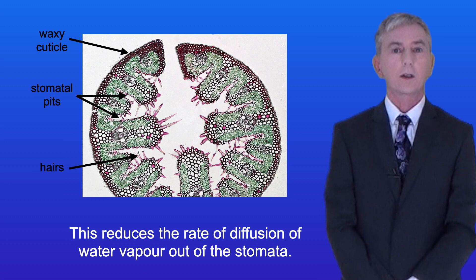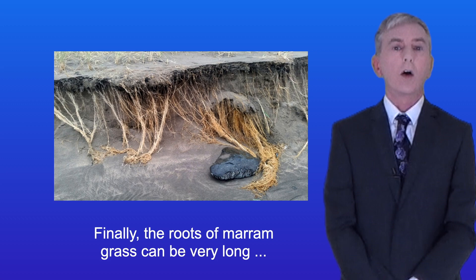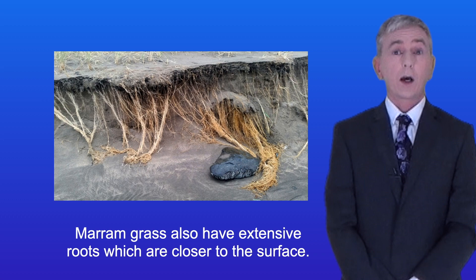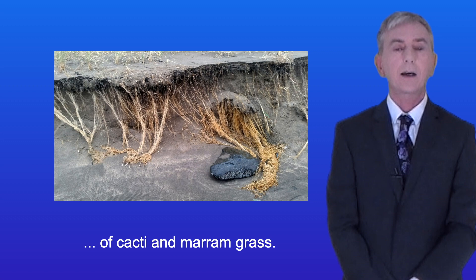Marram grass also has a very thick waxy cuticle to reduce evaporation from the surface. The roots of marram grass can be very long, extending deep into the sand to find water. Marram grass also has extensive roots which are closer to the surface, which help the sand to retain water. So hopefully now you can describe the xerophytic adaptations of cacti and marram grass.